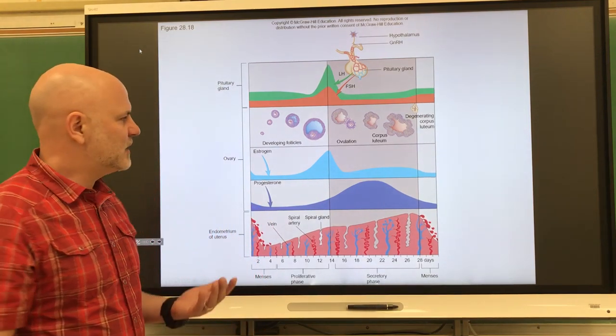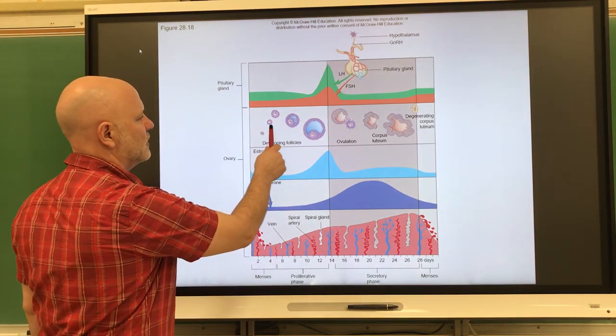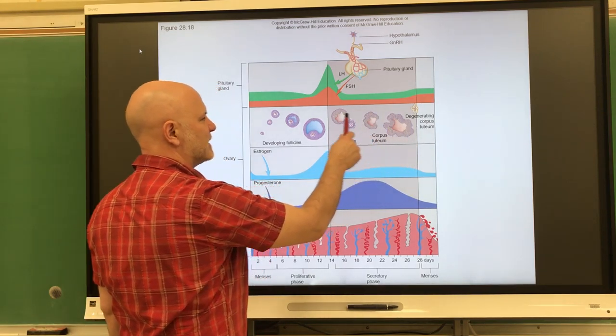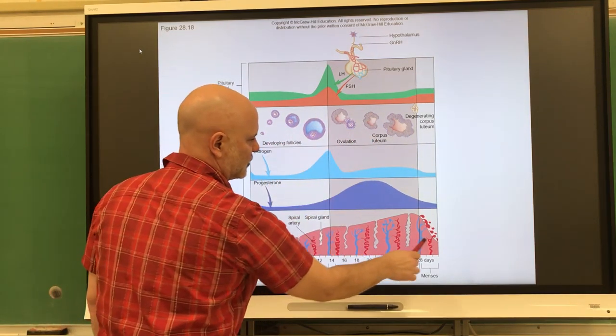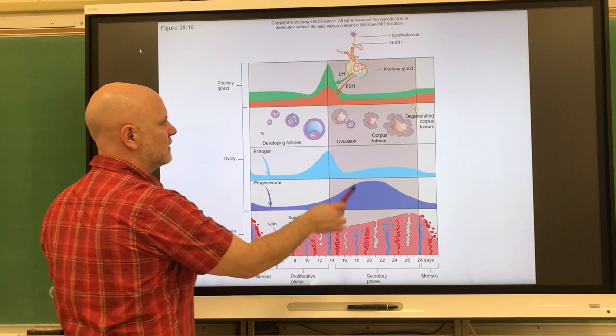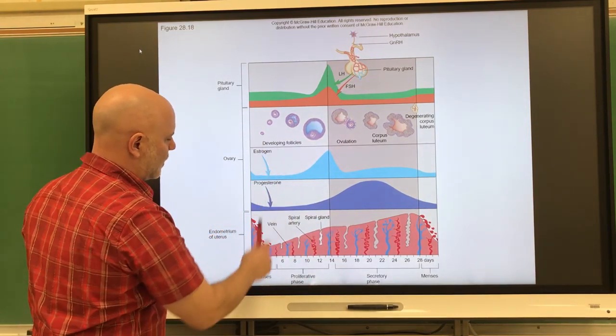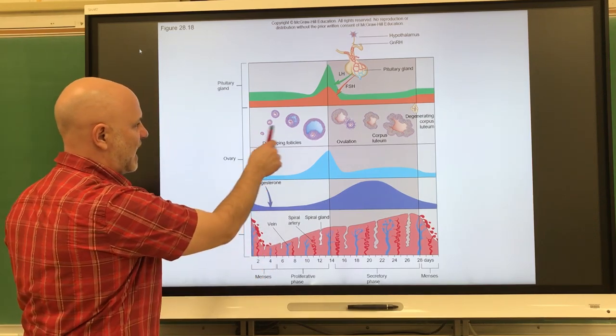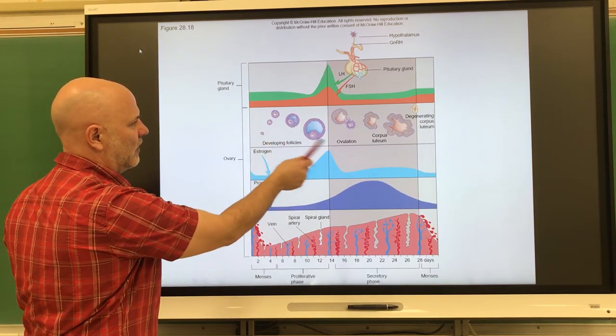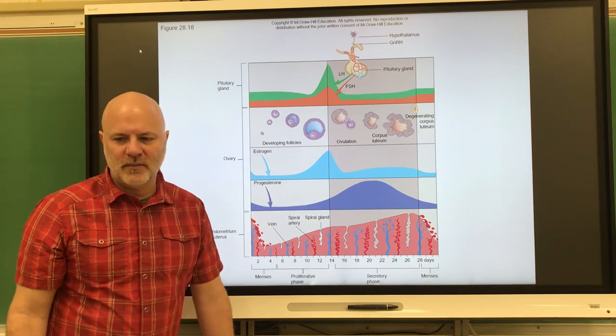We are starting here. This is showing the ovarian cycle occurring, this is showing the menstrual cycle occurring, and these are showing different levels of hormones. Here we're going to start off essentially the same day: day one of the ovarian cycle, day one of the menstrual cycle.